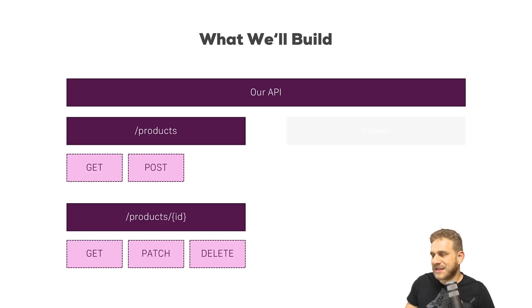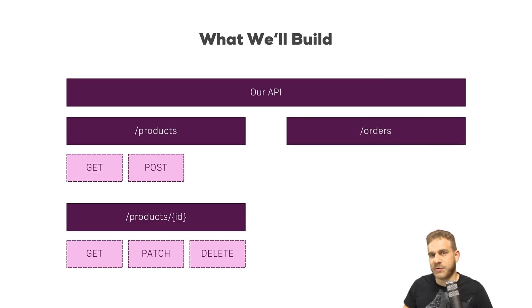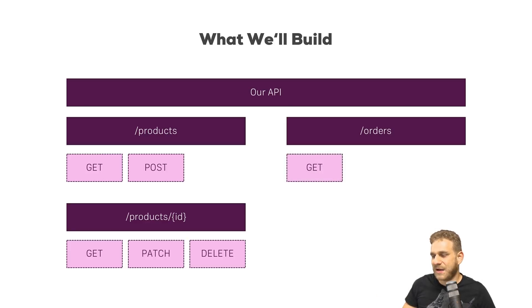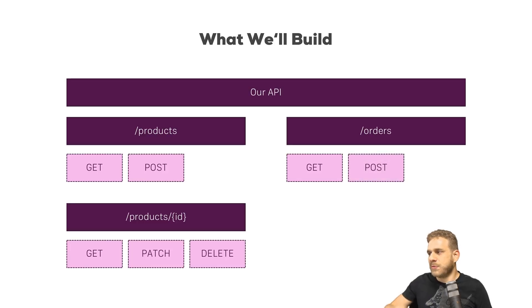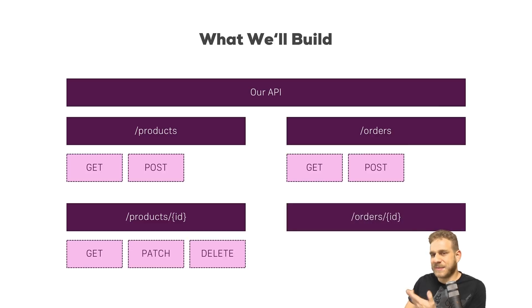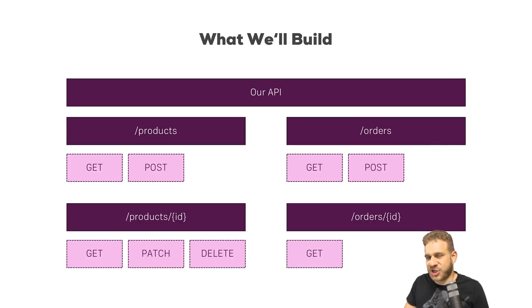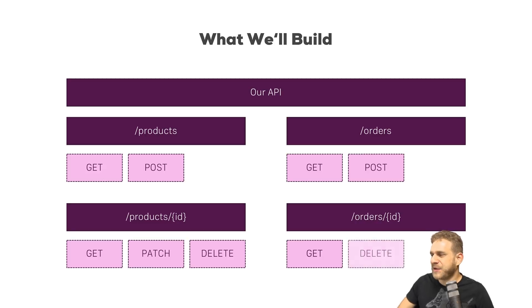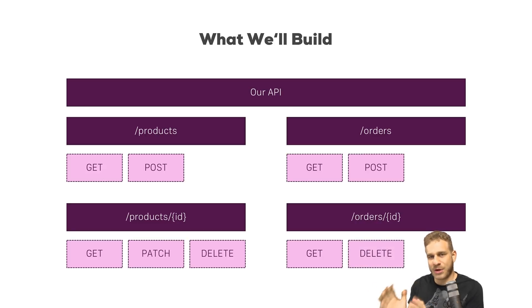Let's also implement our orders resource where we can place orders — so where we could get a list of all the orders we have. I also want to be able to POST a new order, so create a new order, and also access an individual order. Just like for products, get more information about it — and not PATCH it; let's say we shouldn't be able to edit our orders — but we could DELETE, so cancel them. That is what I want to build.